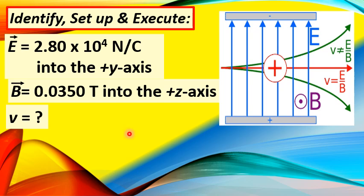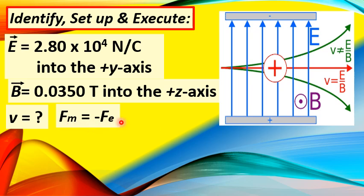This condition happens if the net force acting on the particle is equal to zero. That is, the magnetic force F sub M must be equal in magnitude to the electric force F sub E, but exactly opposite in direction. When you add these two forces, their vector sum must be equal to zero. We are considering that the weight or gravitational force on the particle is negligible, so only the magnetic force and the electric force are considered significant.